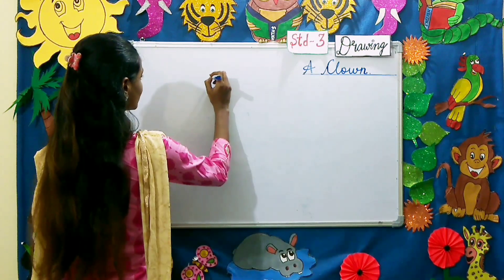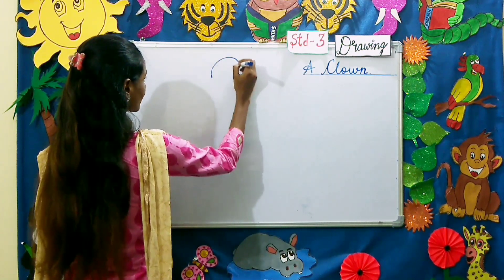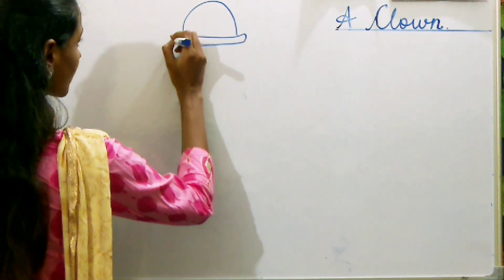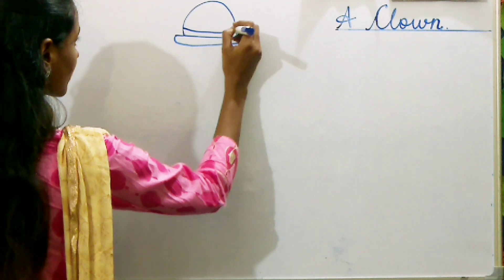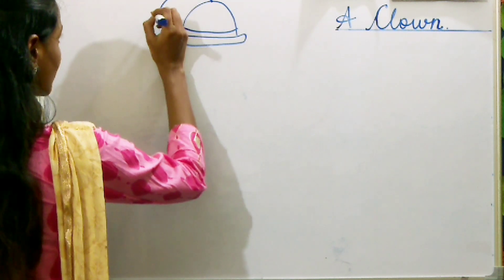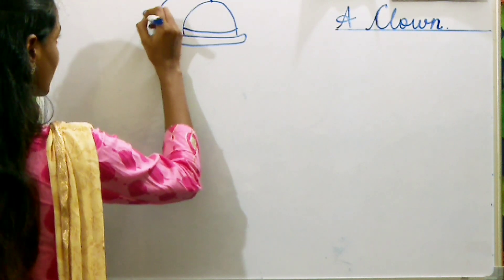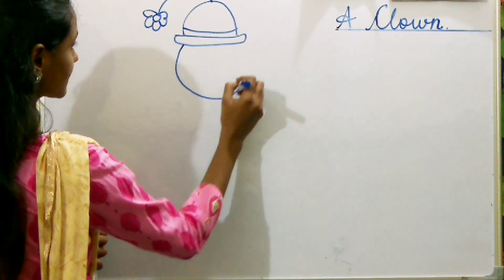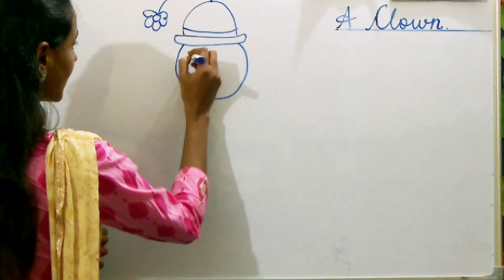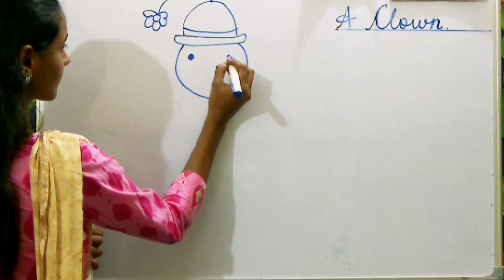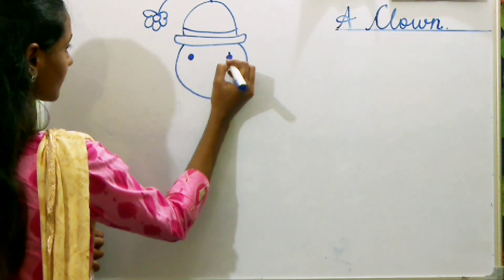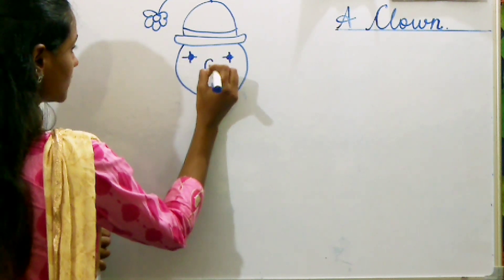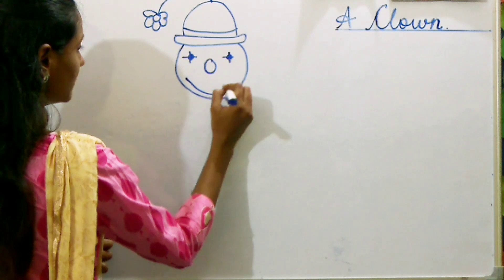First we will draw the hat of the clown. Second step, we will draw the face, the eyes, the nose, and a big smile.